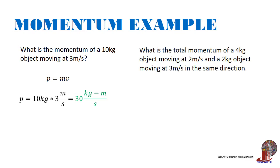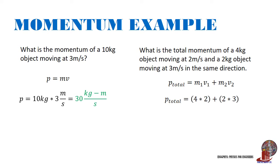Another example: what is the total momentum of a 4-kilogram object moving at 2 meters per second and a 2-kilogram object moving at 3 meters per second in the same direction? With two objects moving in the same direction, we compute total momentum by the summation of their individual momenta. So we get 4 times 2 plus 2 times 3, which equals 14 kilogram meters per second.